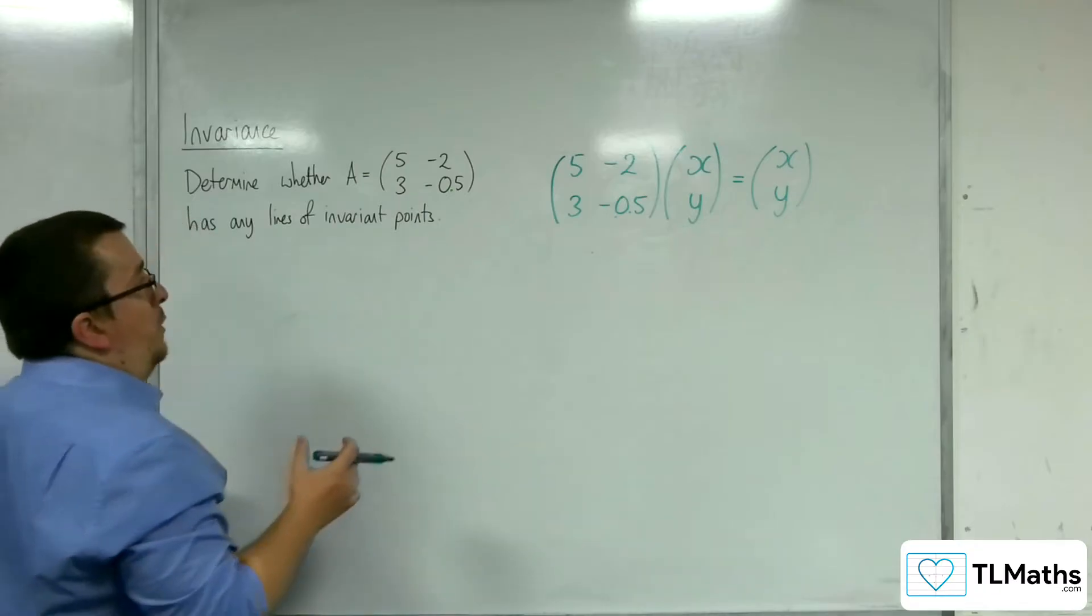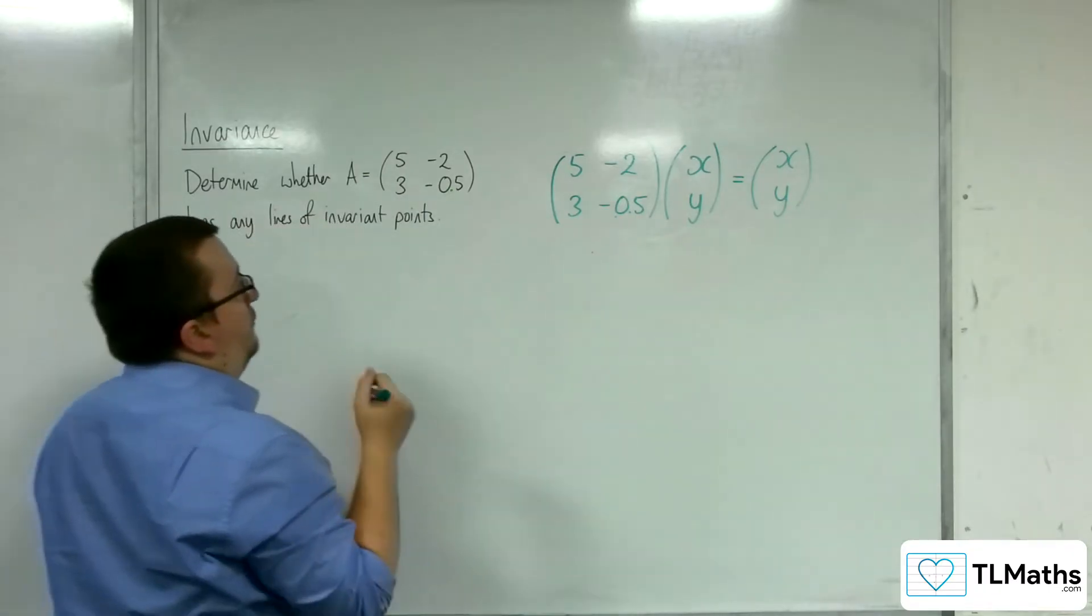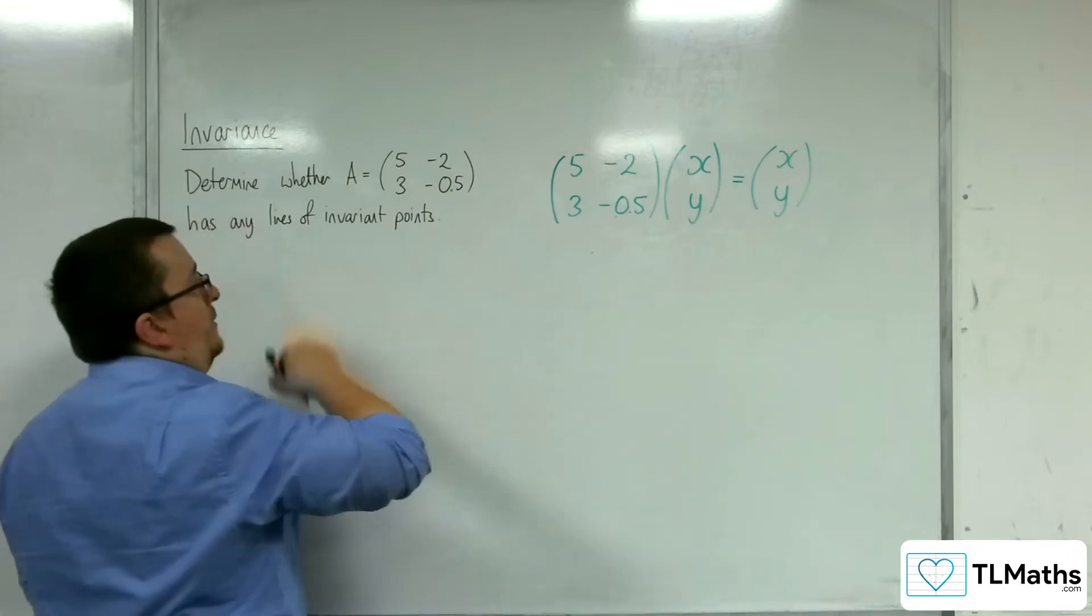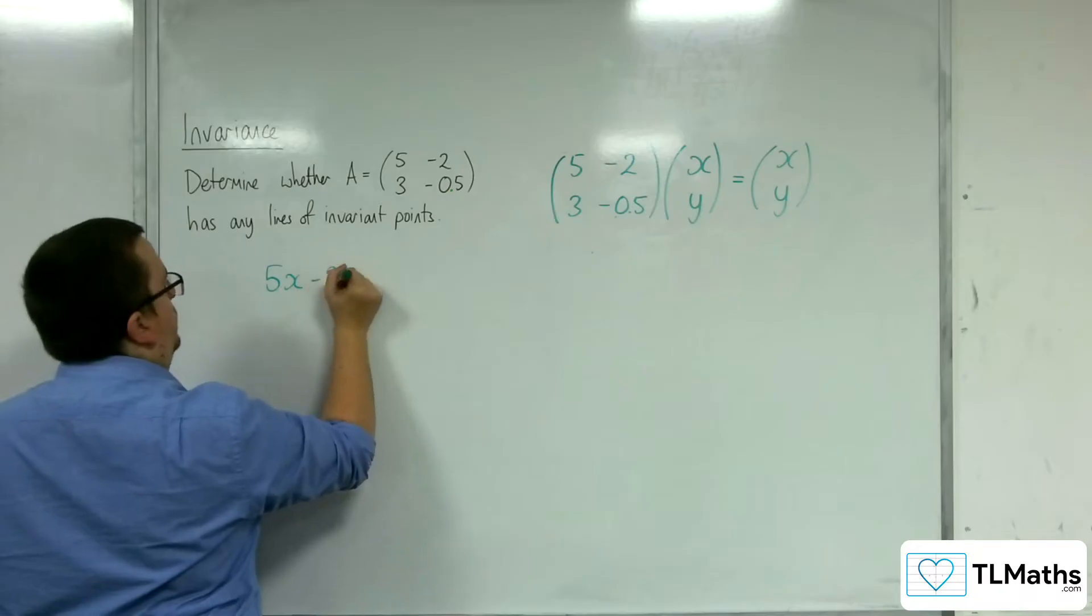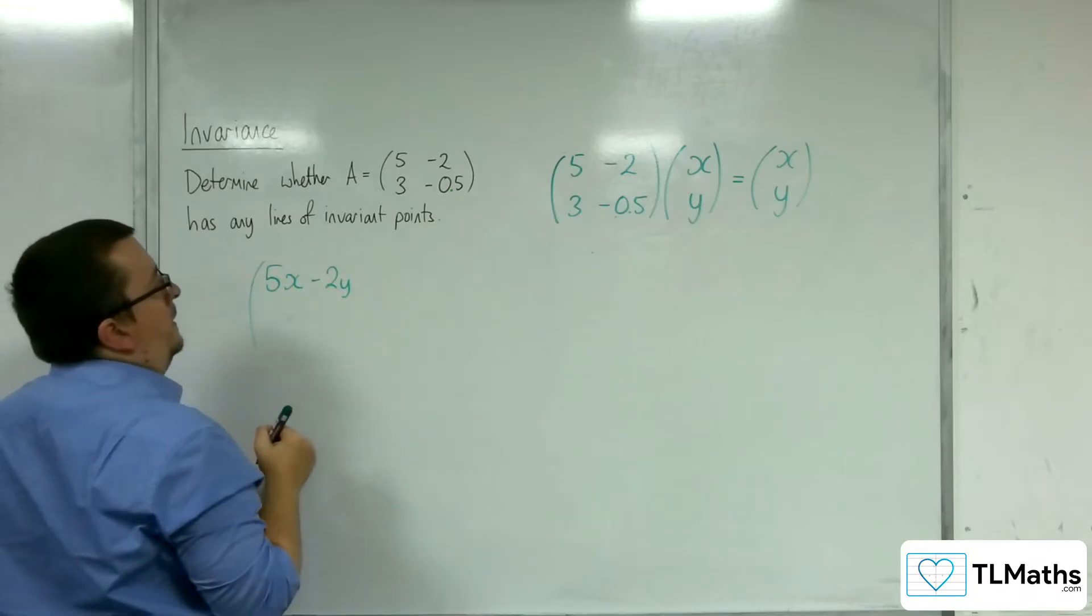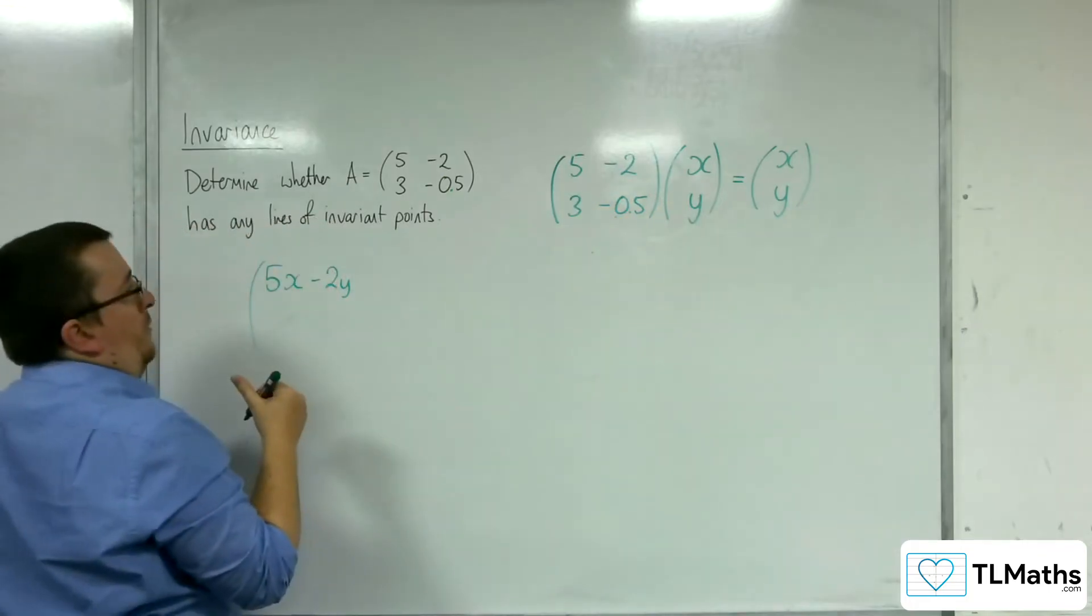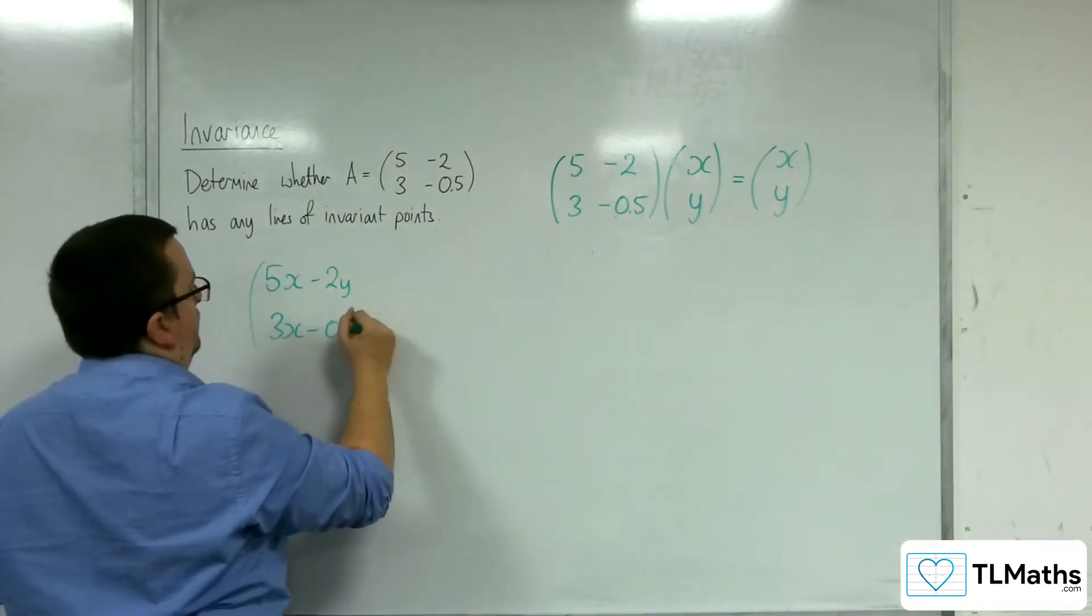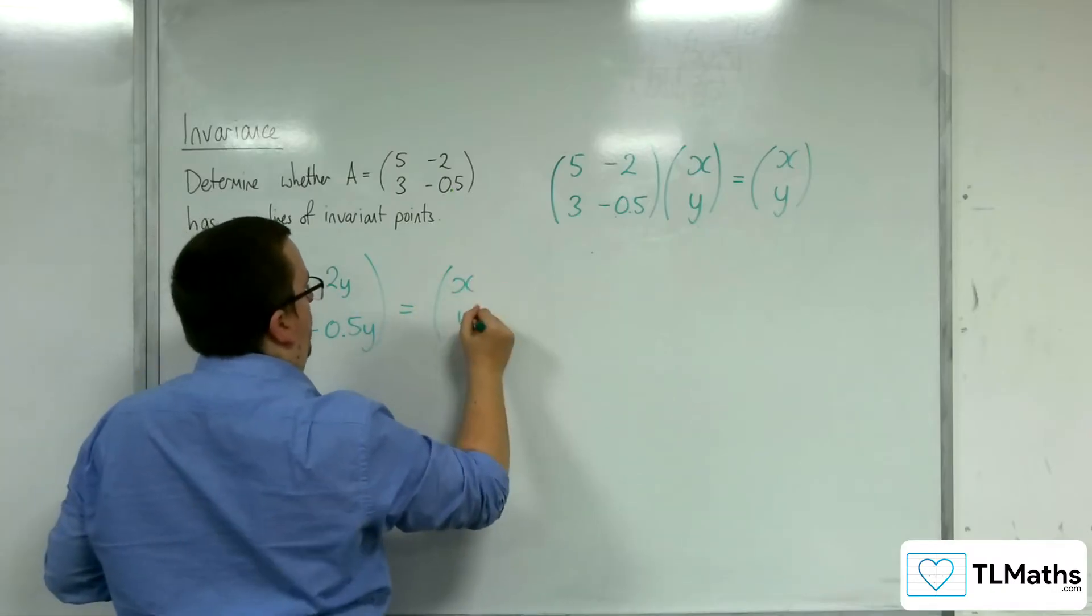Let's multiply this left-hand side out. We've got 5 lots of x and minus 2 lots of y, so 5x minus 2y. And we've got 3x, take away 0.5y. And that's got to be equal to x, y.